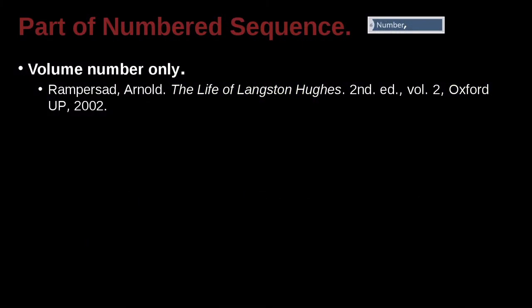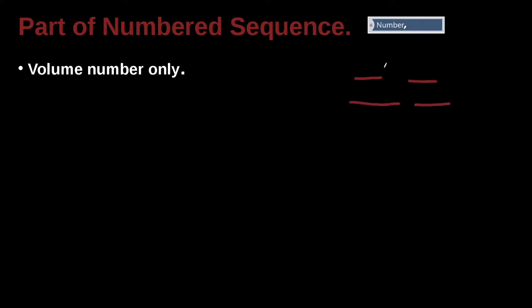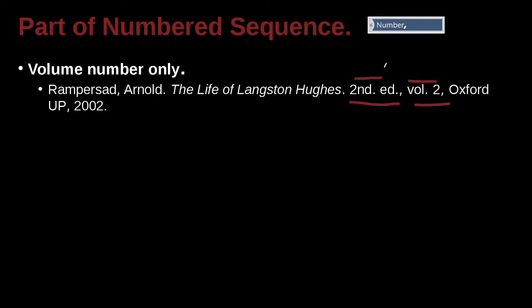Here's an example of numbers again, and here we have the author Ramsburg Arnold, 'The Life of Langston Hughes,' Second Edition, Volume 2, Oxford University Press, 2002. So we have the edition and the volume number, because there could be more volumes — three, four, five volumes inside that series of books.